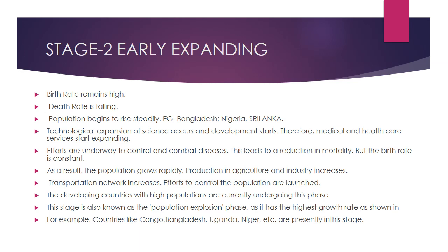To summarize Stage 2 — Early Expanding: the birth rate remains high and the death rate is falling, causing the population to increase very fast. This phase is also called the population explosion phase. Countries under this phase are most probably developing countries, such as Bangladesh and Sri Lanka.